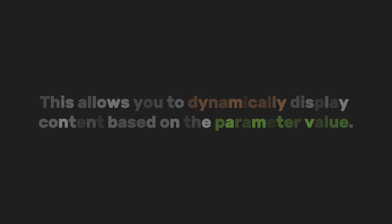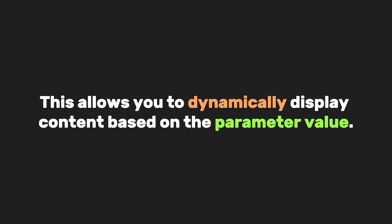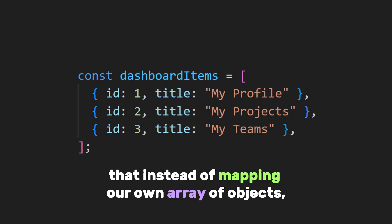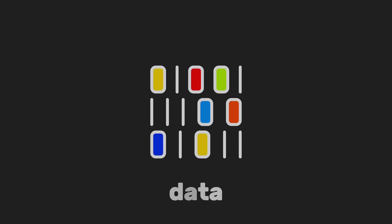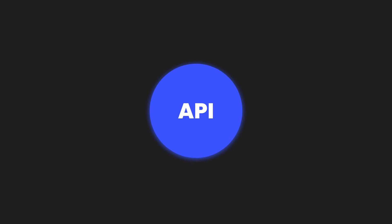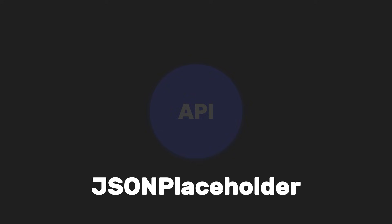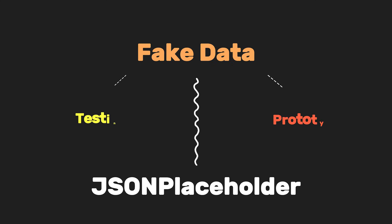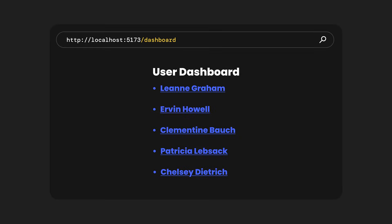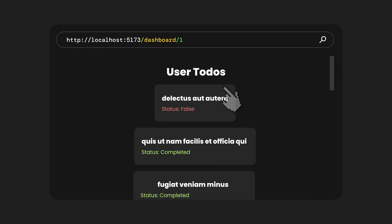This allows you to dynamically display content based on the parameter value. Now, instead of mapping our own array of objects, imagine replacing it with data from an API. Let's use the API provided by JSONPlaceholder. This API provides fake data for testing and prototyping, including users, posts, and to-dos. Here, we'll fetch the list of users and map them into clickable links so that when you click on a user, it navigates to a page showing their associated to-dos or other details.